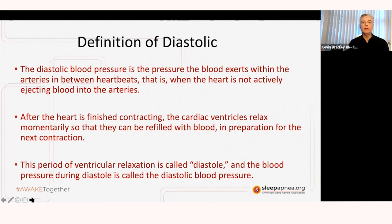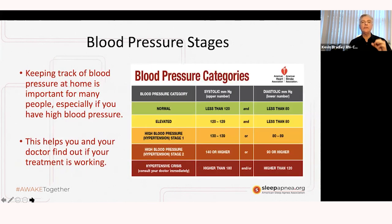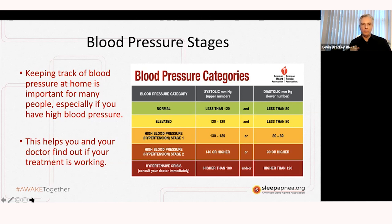A lot of people are concerned about their higher blood pressure number, but you also don't want a high diastolic pressure, because it means the arteries haven't had a chance to relax during the diastolic phase and there's still considerable resistance. That could be related to atherosclerosis — a buildup of plaque in the artery — or the fact that the arteries have been constricted for so long due to high blood pressure that they don't have the opportunity to relax.